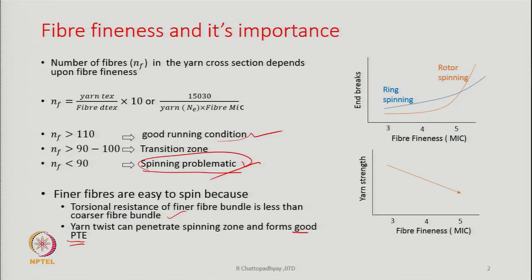The finer the fibers, the better it is. As shown in the diagram, as fibers become coarser the end break rate goes up — this is true for both ring spinning and rotor spinning. Coarser fibers mean fewer fibers in the construction, less cohesion, and the twist is not able to penetrate the fibers in the rotor groove, so end breaks increase. Also, with coarser fibers the yarn strength goes down due to loss of cohesion between fibers.